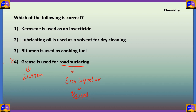Option 3 says bitumen is used as cooking fuel. There are many substances which can be used as cooking fuel — such as wood, coal, and dung — but bitumen is not one of them. So option 3 is also incorrect.